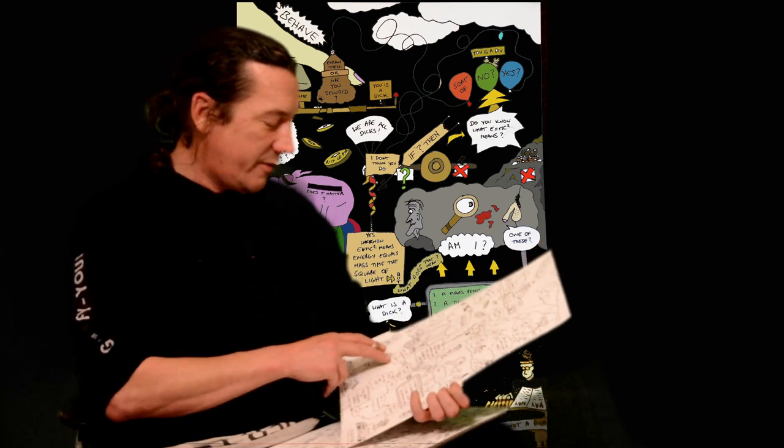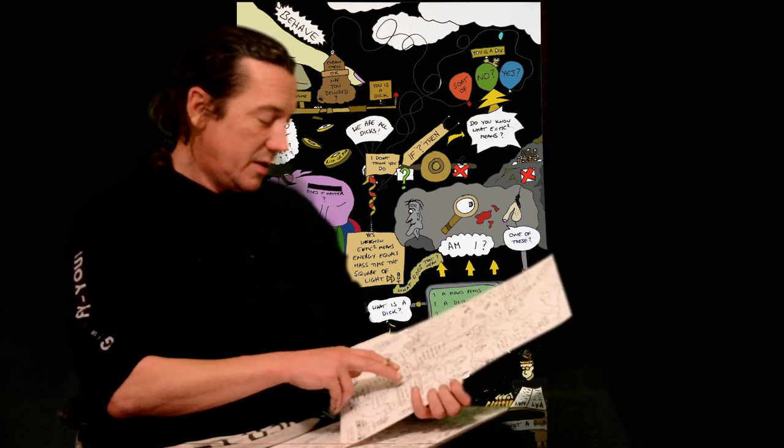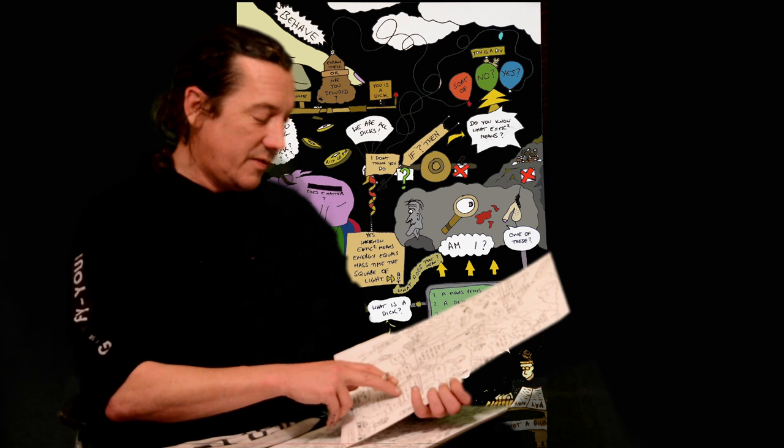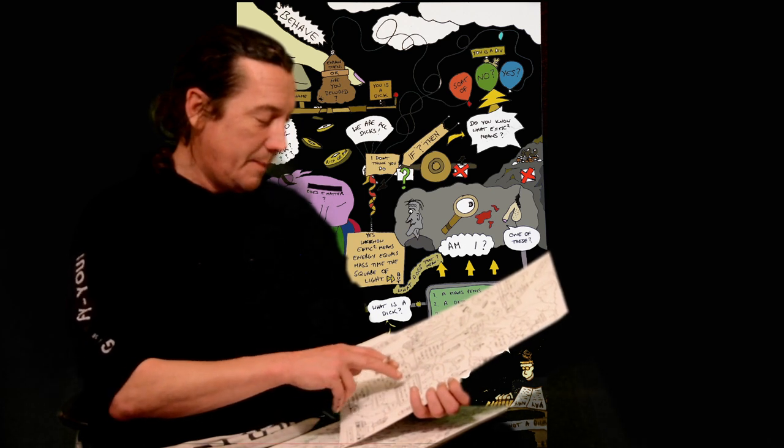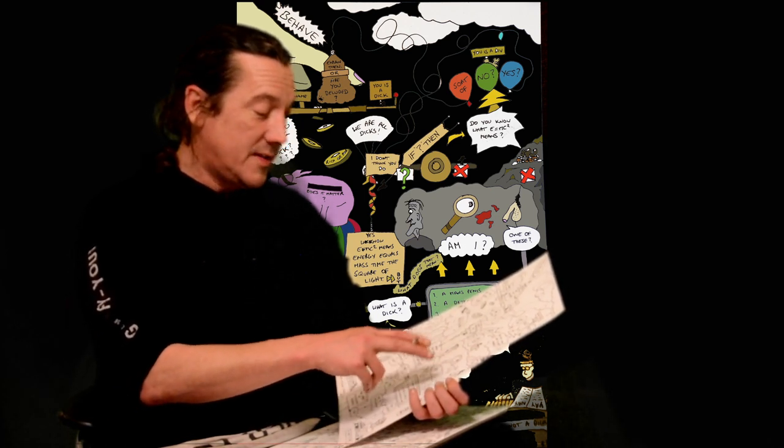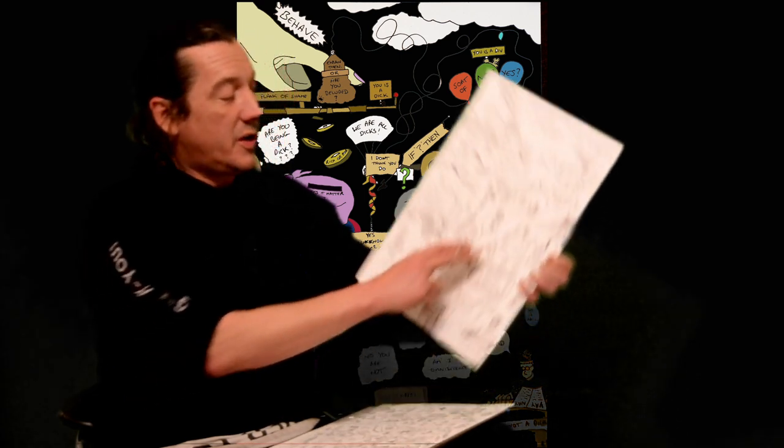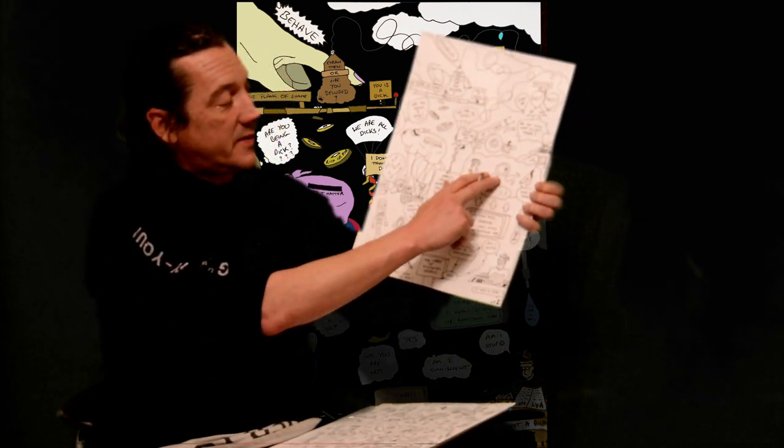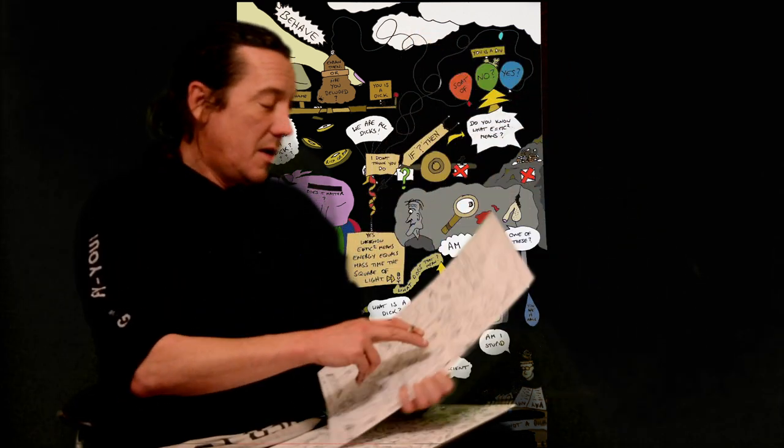So it's basically, why is everyone a dick? What is a dick, right? A man's penis, a detective, a mean, stupid, or annoying man. Am I one of these things? And then you look up, you know, a mean, stupid, annoying man, a detective, and a dick. And it goes up.